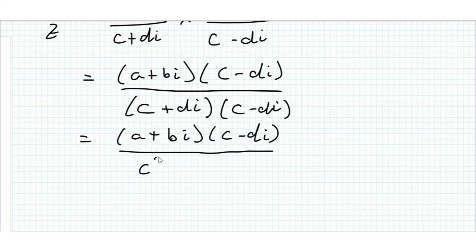c squared, and then we get minus d squared i squared, but i squared is minus one, so plus d squared. And c and d are both real numbers, so that's how we can get rid of the imaginary part